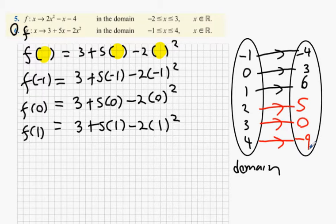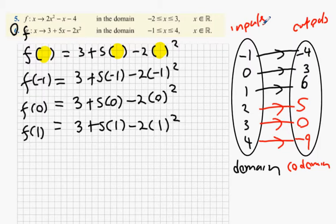Now what I need you to be able to write down in your exam: these values here are the outputs, the other ones are the inputs. Inputs is always domain, outputs is codomain.